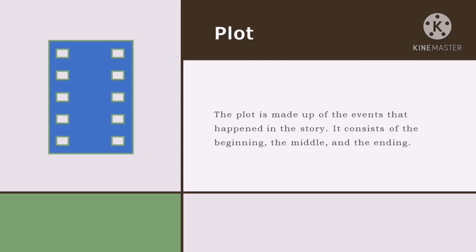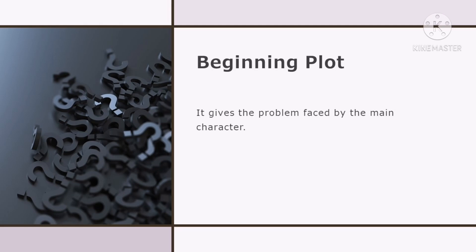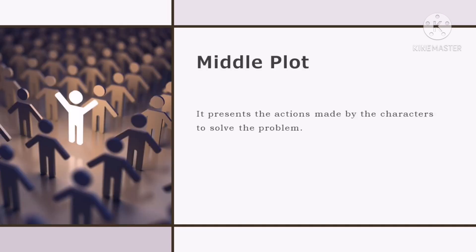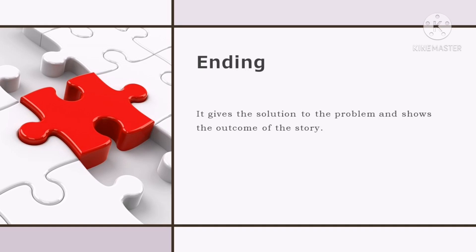The plot consists of the beginning, the middle, and the ending. The beginning plot gives the problem faced by the main character. The middle plot presents the actions made by the characters to solve the problems. And the ending plot gives the solution to the problems and shows the outcome of the story.